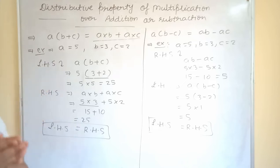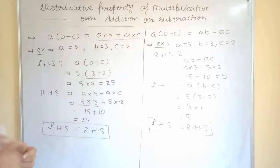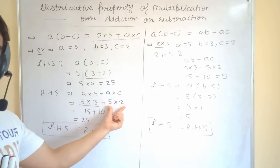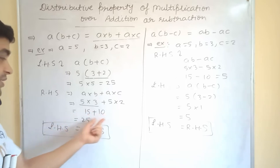Now, we are going to see RHS right hand side. Right hand side is nothing but A into B plus A into C. Again, we are going to put the value. Same value we are going to consider in the second part also. So, RHS will be 5 into 3 plus 5 into 2. So, 5, 2 is 10. 5, 3 is 15. Again, 15 plus 10 will come 25.